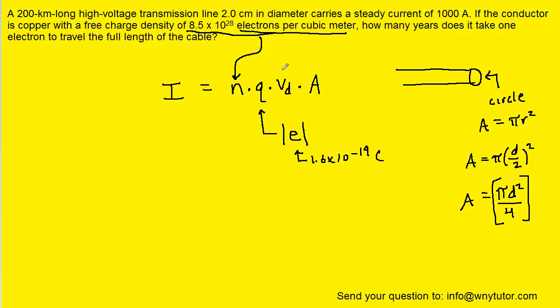What we want to do is solve this equation for the drift speed VD, so we're going to divide both sides by NQA.